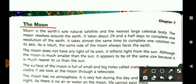The moon is the earth's only natural satellite as we all know, and it is the nearest large celestial body. It revolves around the earth and takes about 29 and a half days to complete one revolution of the earth.